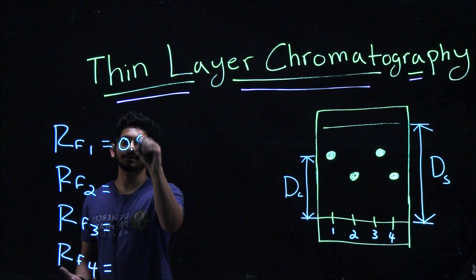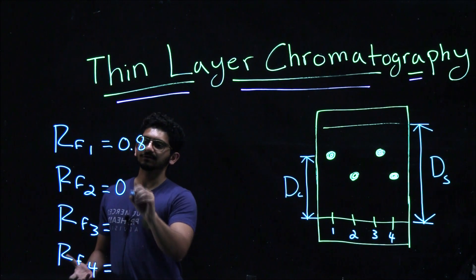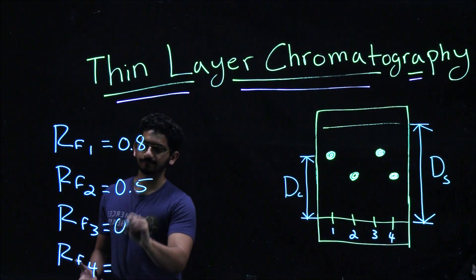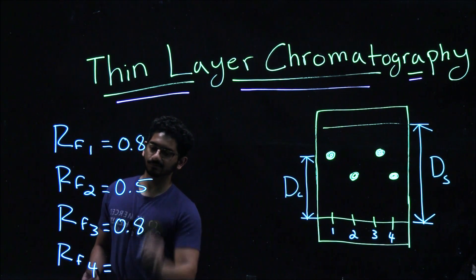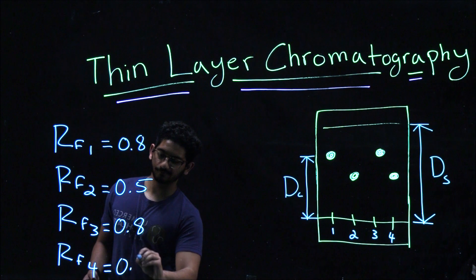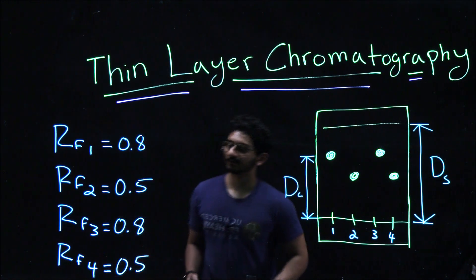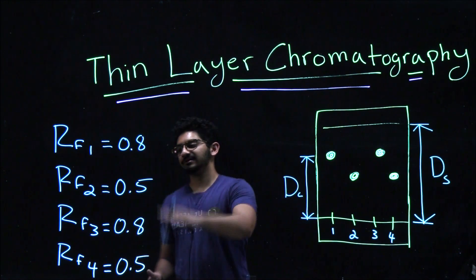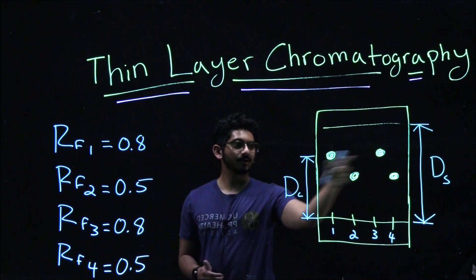Let's say spot 1 has 0.8, spot 2 has an RF value of 0.5, spot 3 has 0.8, and spot 4 has 0.5.